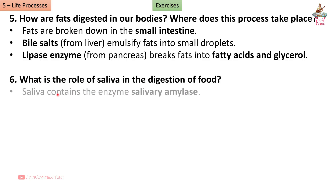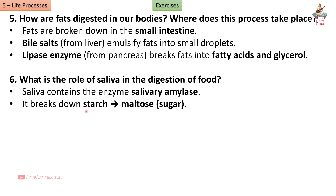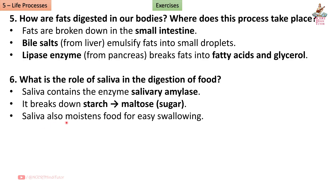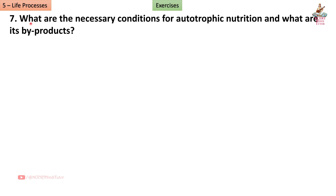Question 6: What is the role of saliva in the digestion of food? Answer: Saliva contains the enzyme salivary amylase, which breaks down starch into maltose (sugar). Saliva also moistens food for easy swallowing.